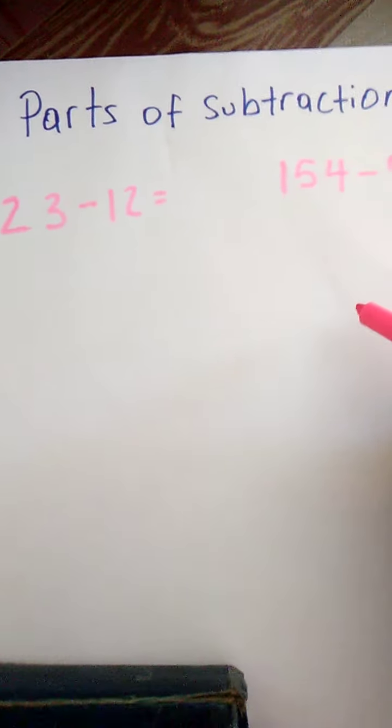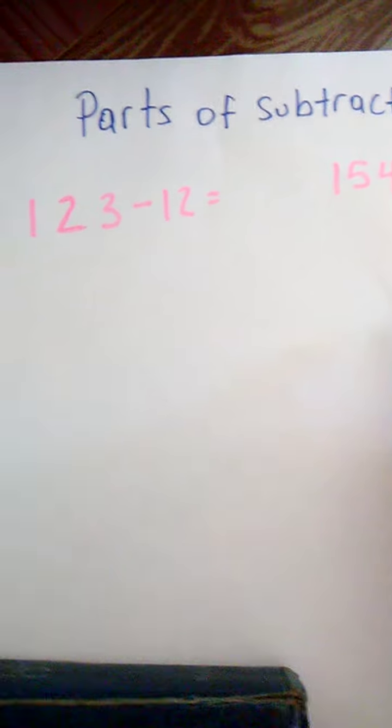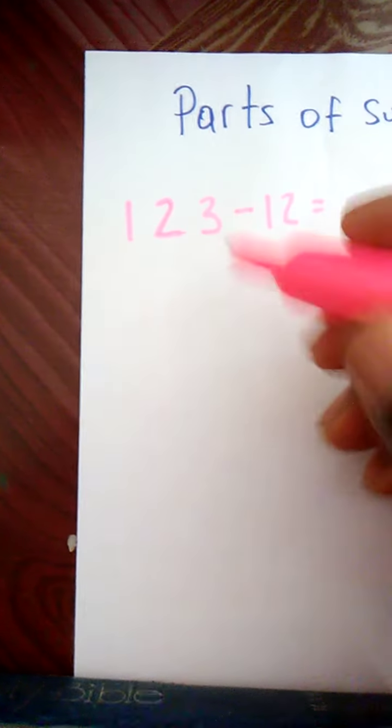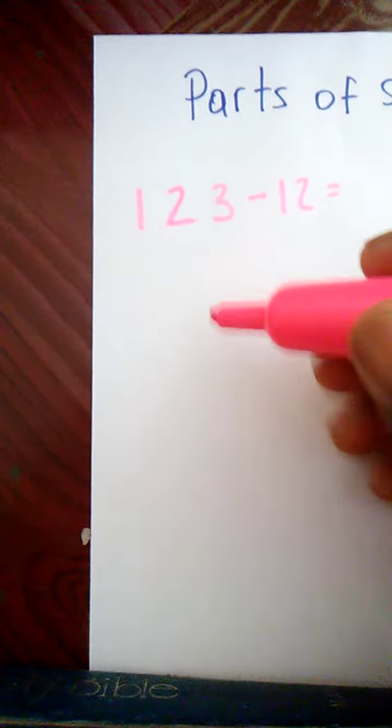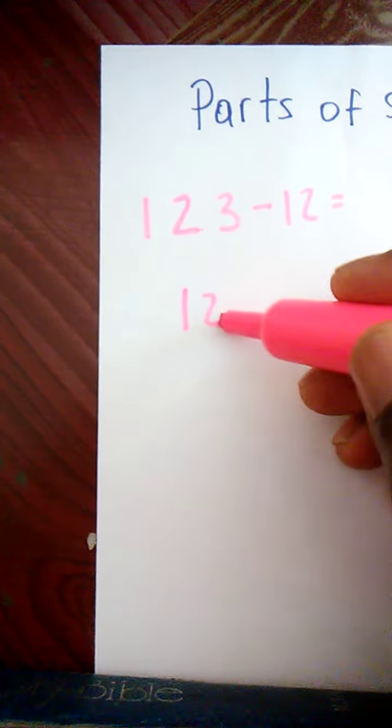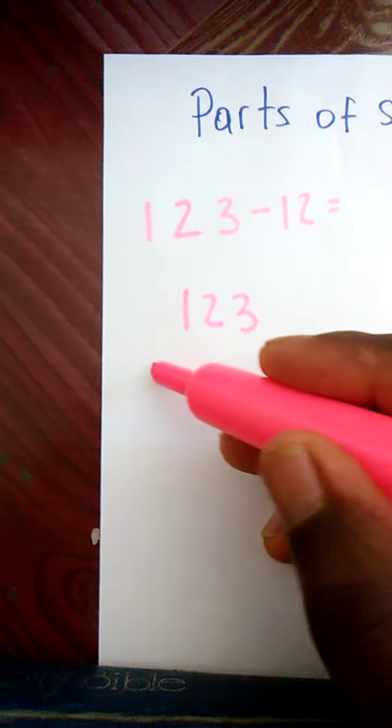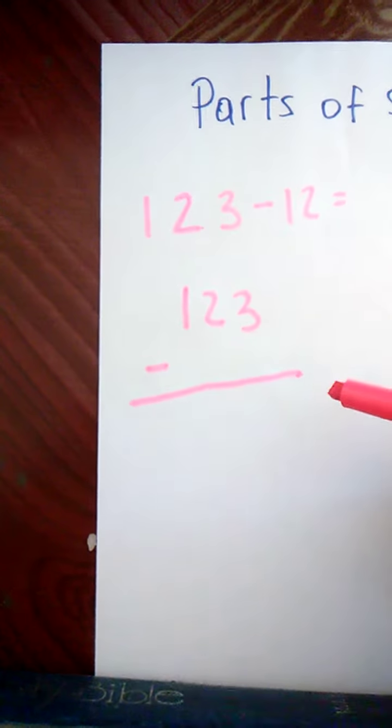And so the parts of subtraction. If I'm going to set up this subtraction, I first need to set it in this format. 123 minus 12. So I have 1, 2, 3. I have my minus sign. I draw my line.